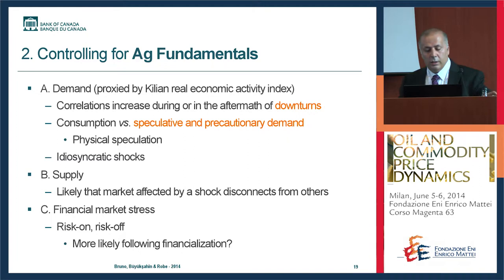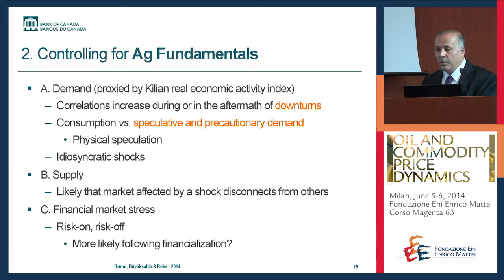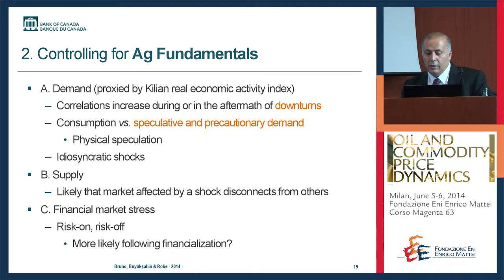We control for agricultural fundamentals including demand — using Kilian's Real Economic Activity Index, since world economic activity is more important than US-only measures. We also look at consumption versus precautionary demand, physical speculation, and commodity-specific shocks. For supply, commodity-specific shocks disconnect markets from financial markets. For speculative measurement, we use two forward-looking measures: inventories, and the slope of the futures term structure — available weekly for all markets. For robustness, we use old and new crop USDA forecasts. For livestock, we use cold storage level data, though this is limited to public storage.